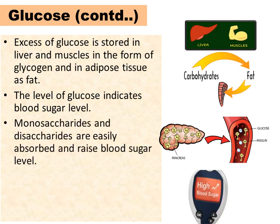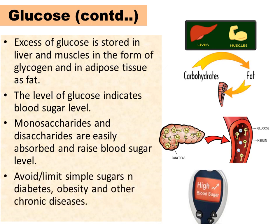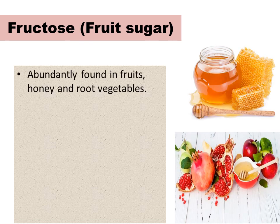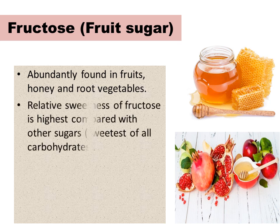Monosaccharides and disaccharides are easily absorbed and thus rapidly raise blood sugar level. So people having diabetes, obesity and many other chronic diseases should avoid or limit consumption of foods rich in simple sugars. Next is fructose. It is also called fruit sugar because it is abundantly found in fruits, honey and root vegetables. The sweetness of fructose is highest compared with other sugars. This is the most basic information which is generally asked in exams.